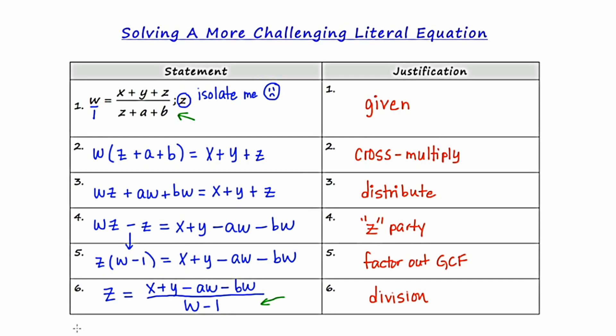So I'm going to write the word restriction. And there's actually two. The first of which is that W minus one cannot equal zero. That would be the first restriction. And some students might prefer to say W cannot equal one, if you want to move that negative one over. And then if we look at the original problem where there's also a fraction, we need to say that Z plus A plus B cannot equal zero.